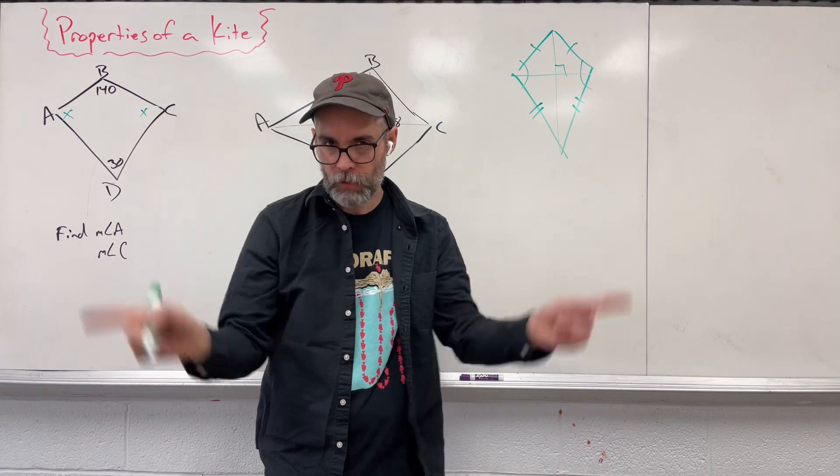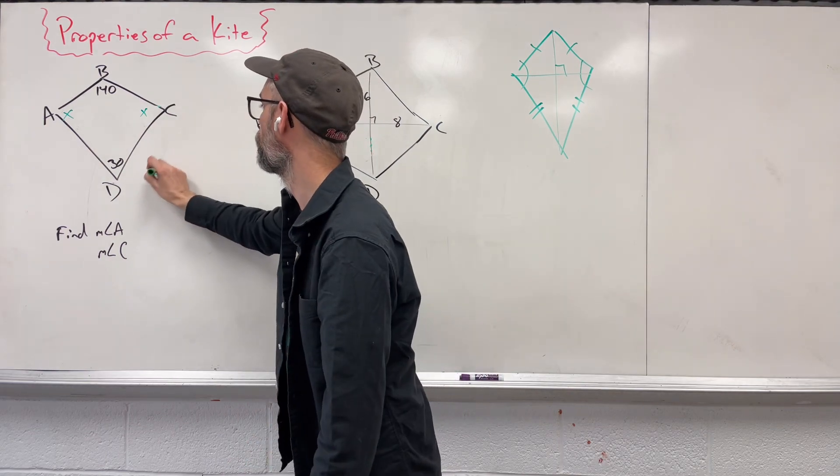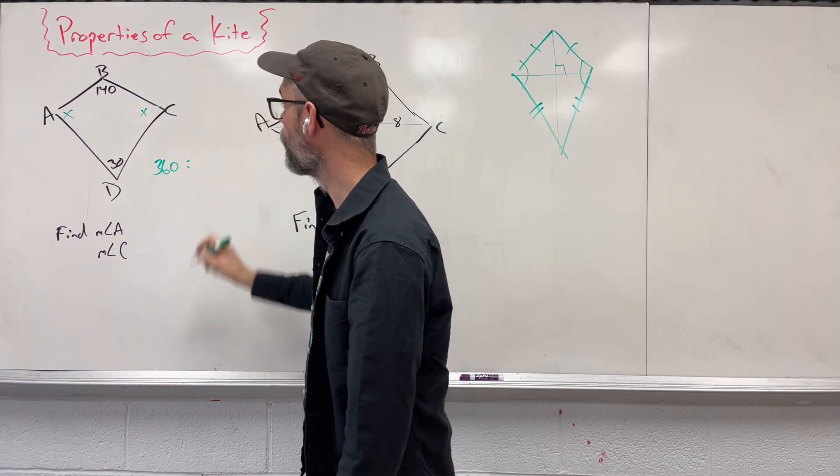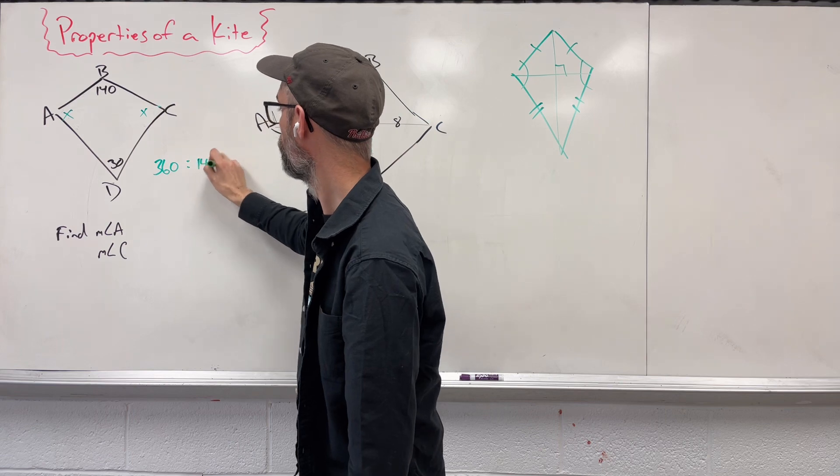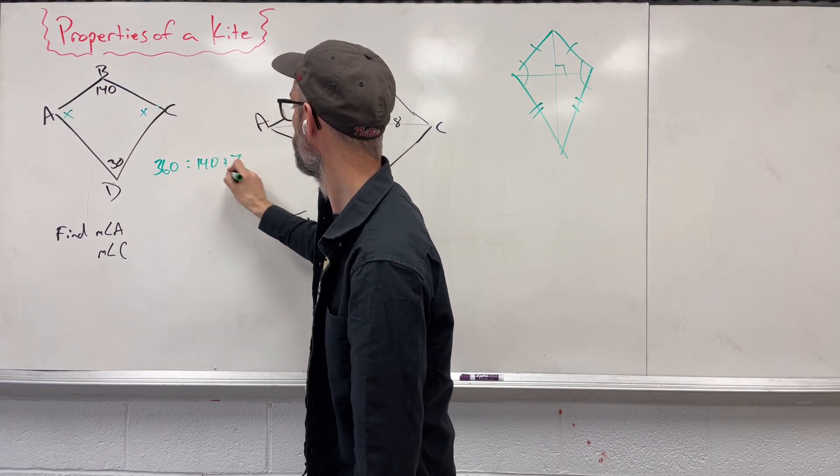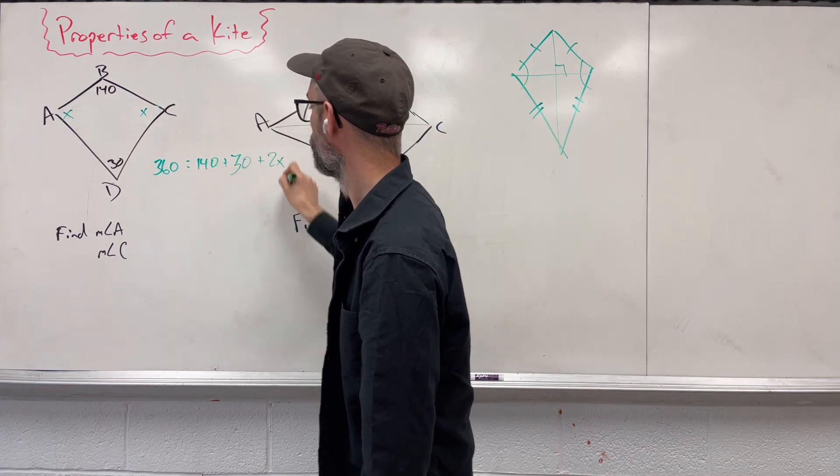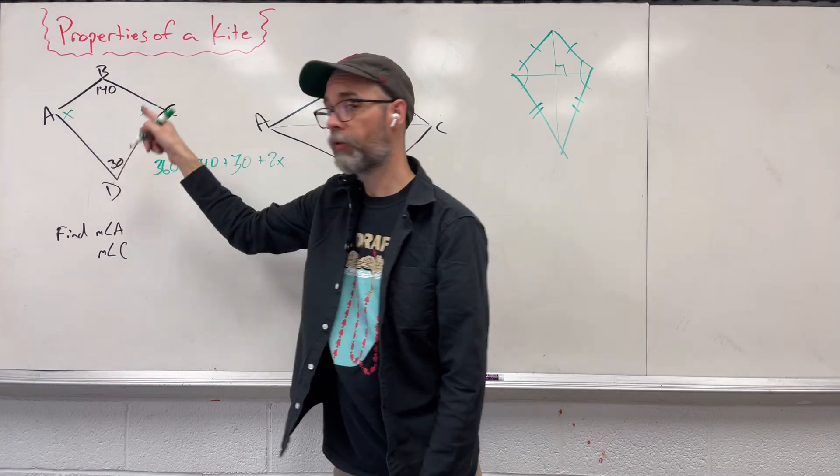So I know within a four-sided figure, we have a total of 360 degrees. I can add everything up. 140 plus 30 plus 2X.